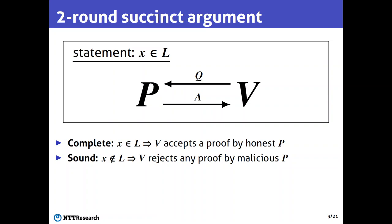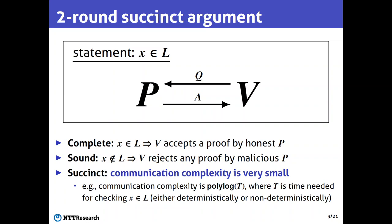For the security, succinct arguments are required to satisfy completeness and soundness, where completeness requires that when the statement is true the verifier accepts, and soundness requires that the verifier rejects any proof made by a malicious prover. Additionally, as an efficiency requirement, a succinct argument is required to satisfy succinctness, which requires that the communication complexity is very small — for example, polylogarithmic in T, where T is the time for checking whether the statement is true or not. In this work, we only consider the succinctness of the communication complexity.